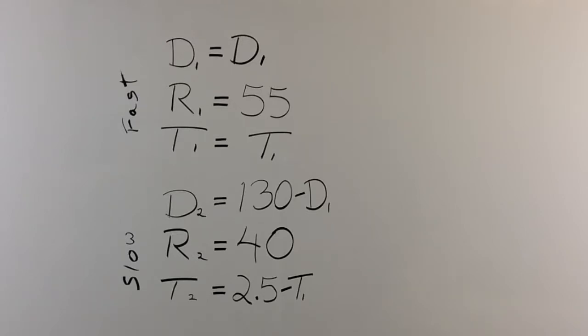So we've filled in all of our slots and let's start building our formulas. For the fast body in motion we have D1 equals 55 times T1. Take a look at that grid. Make sure you understand what I'm doing. D1 equals 55 T1.